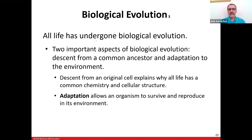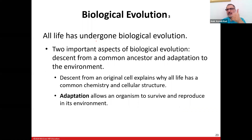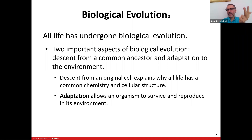Two important aspects of biological evolution are: descent from common ancestors, and adaptation. All organisms descended from a common ancestor, which explains why all cells share common chemistry — bacteria, fungi, and humans all have DNA and all perform cellular respiration. Cells without mitochondria cannot do the electron transport chain, but they all do fermentation and glycolysis. Adaptations allow organisms to survive and reproduce in their environment.